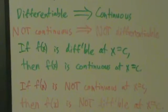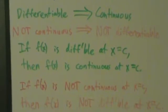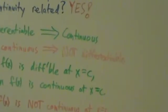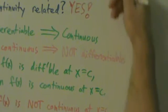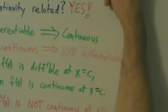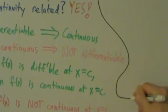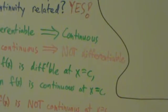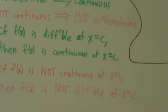But what if you are continuous? Does continuous imply differentiable? We actually kind of already know the answer to that, but let's summarize it. Let's see an example of a function that's not continuous at a point.